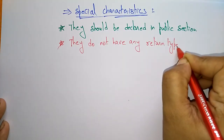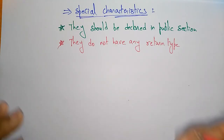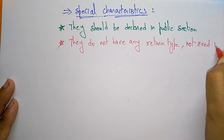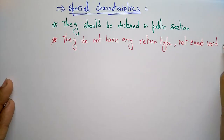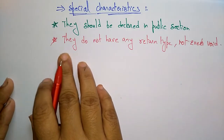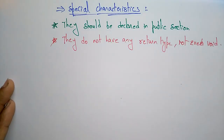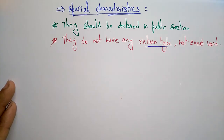The second characteristic: constructors do not have any return type — not even void. You will observe that wherever we use the constructor, the constructor name is the same as the class name, and we do not use any return type, not even void.